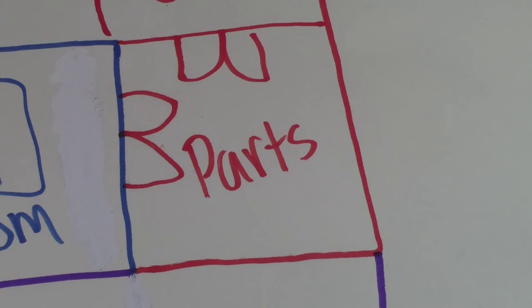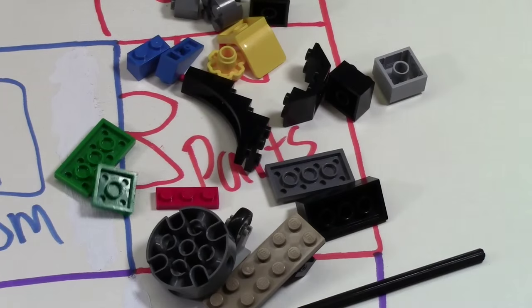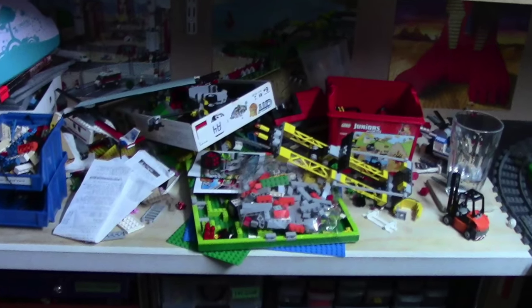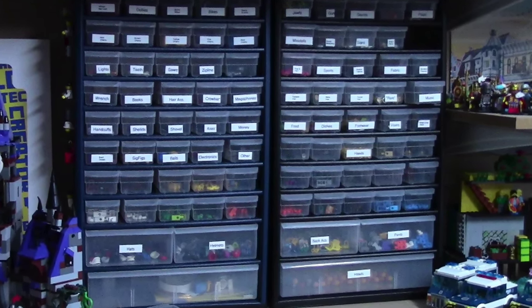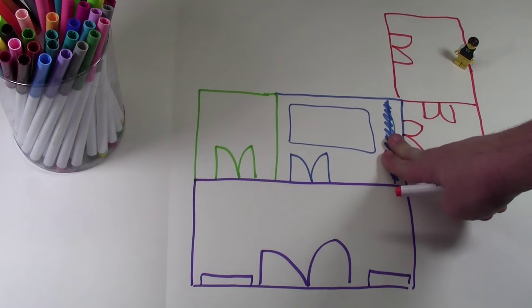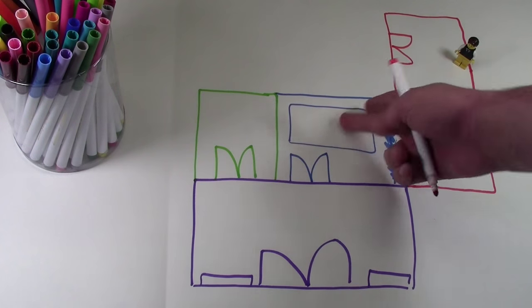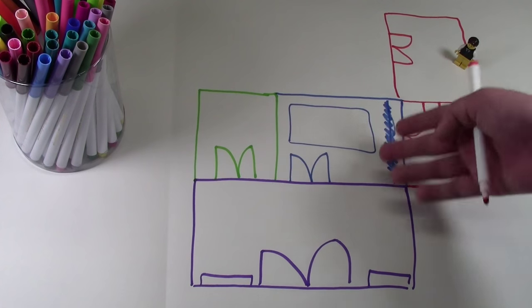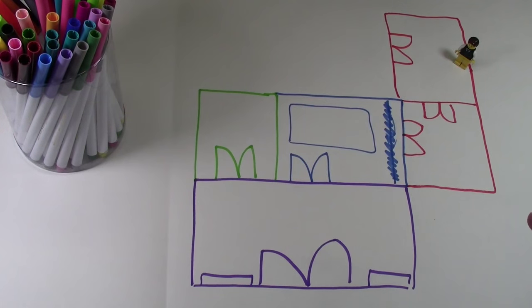This right here would be my parts room. So basically I'd have parts lining all the walls here with lots of table space, just thousands and thousands of parts, and this is where I do all my building. I had the tables there, but I scratched those out because I need the doors to go into the LEGO city room, and they'd be really big doors so I could open it up and kind of make it one room, and then shut them again just to keep it separate.